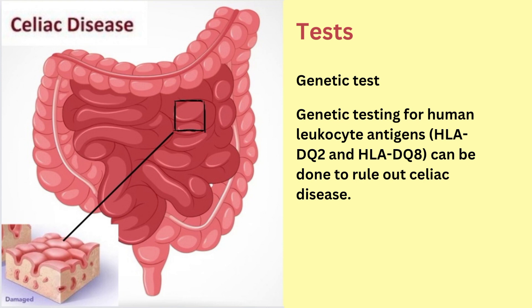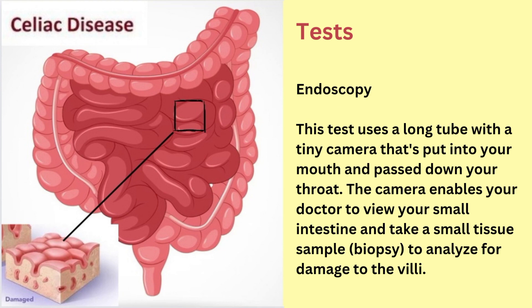The next test is genetic testing for human leukocyte antigens. HLA-DQ2 and HLA-DQ8 can be done to rule out celiac disease. The next test is endoscopy. This test uses a long tube with a tiny camera that's put into your mouth and passed down through your throat. The camera enables your doctor to view your small intestine and take a small tissue sample called a biopsy to analyze for damage to the villi.